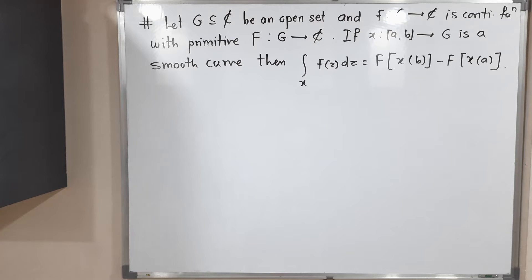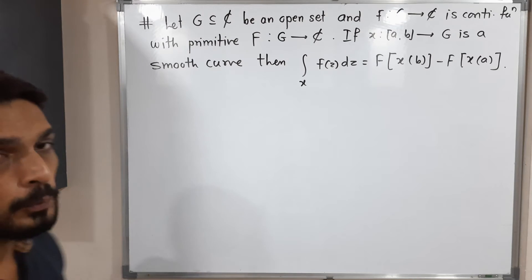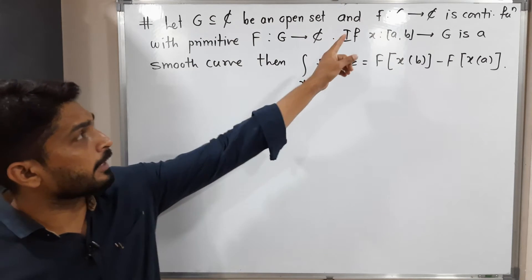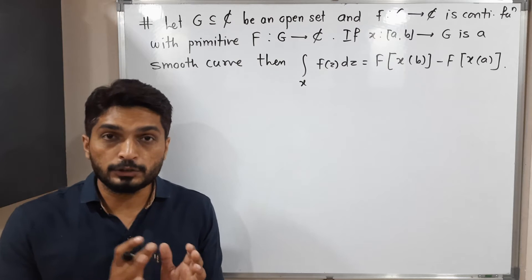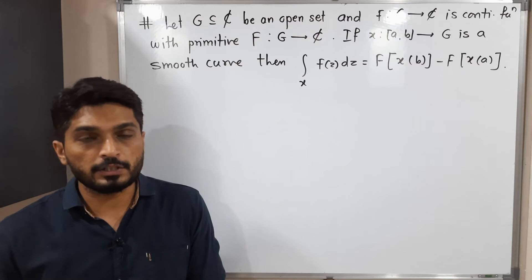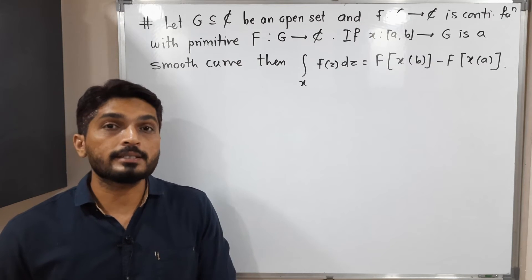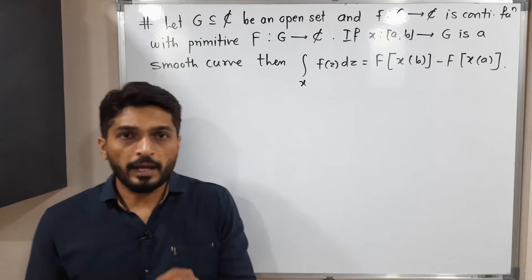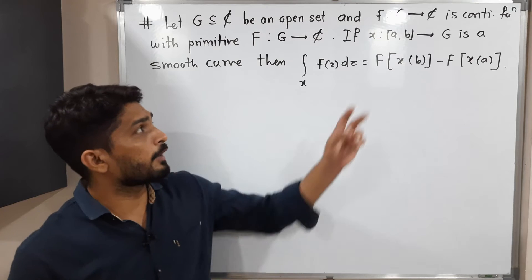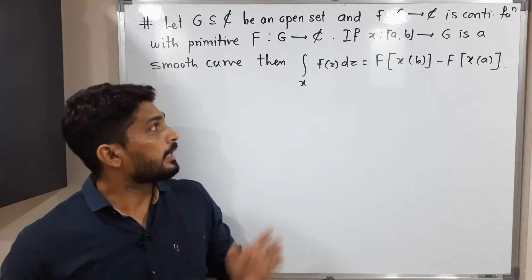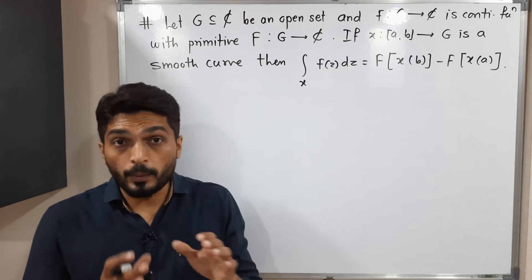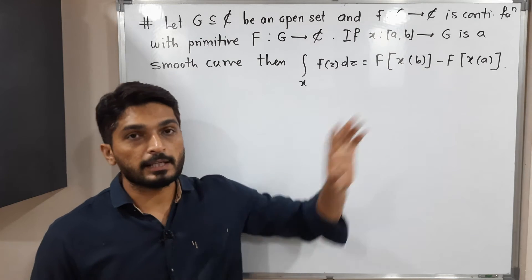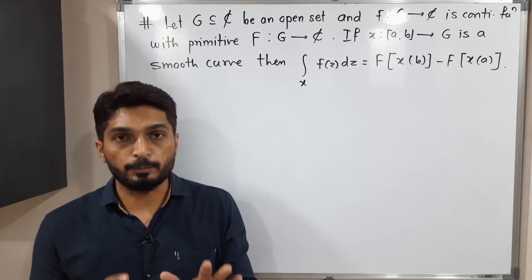Let us discuss this result now. We have an open set G of the complex plane, and a continuous function small f defined on G having primitive — or anti-derivative — capital F. We have a smooth curve γ defined on the closed interval [a, b]. We have to prove that the line integral of small f over γ equals capital F of γ(b) minus capital F of γ(a).